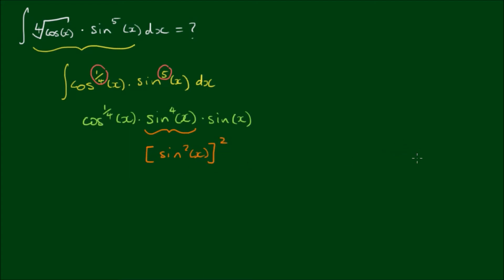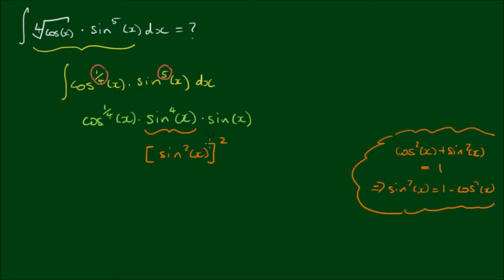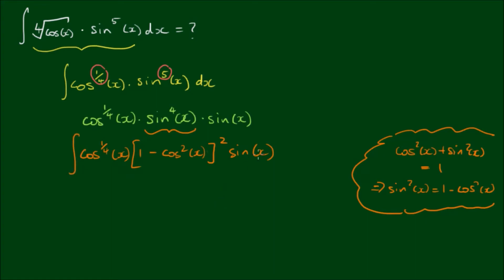Now I can apply the Pythagorean identity. We know that cosine squared of x plus sine squared of x is always equal to 1, so that means I can rewrite sine squared of x as being equal to 1 minus cosine squared of x. So in the brackets we have 1 minus cosine squared of x, and let's copy everything else down — sine of x and the cosine to the quarter power of x at the front. So this is now our integral.